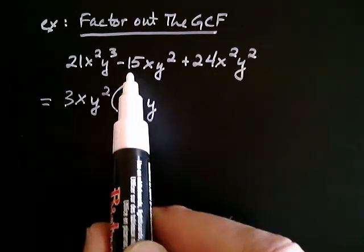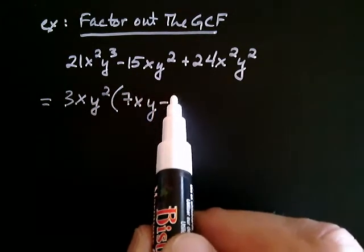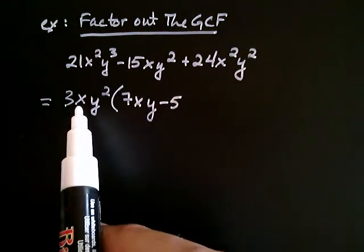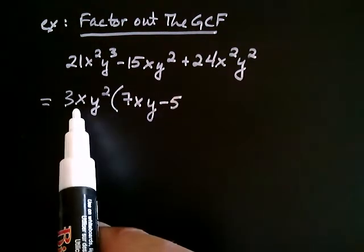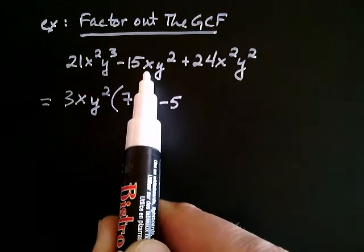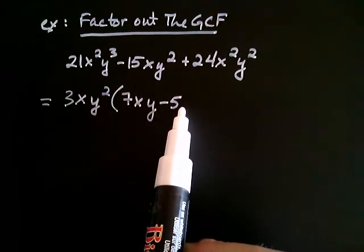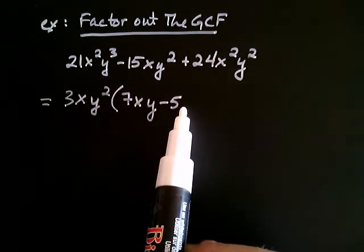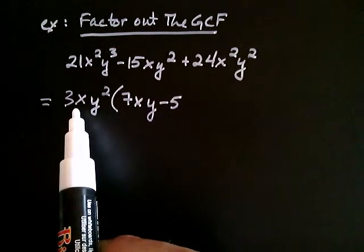And I move on to the next one. Three times what will give me negative 15? Well, that will be a negative five. And let's see, x, well, when I distribute that x, the x shows up here, but this only needs one x. So, I don't want to put any x's in here because the only x that I need is already supplied by the GCF.